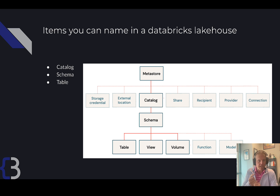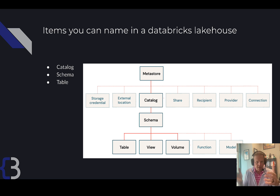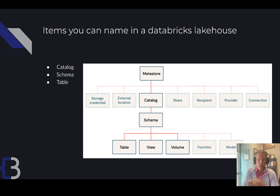What we're naming here are catalogs, schemas, and tables. The Metastore exists for the entire Azure subscription or AWS tenant — you only get one and you don't really name it. The catalog is analogous to a database, and you can have many catalogs. Schemas sit underneath catalogs, and underneath schemas you can have tons of tables and views.